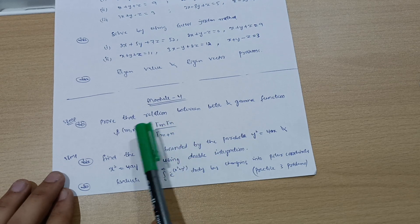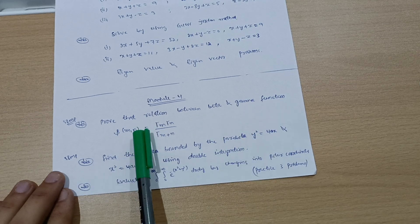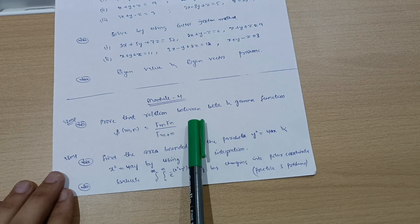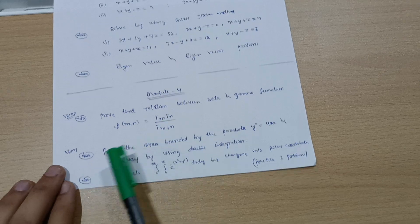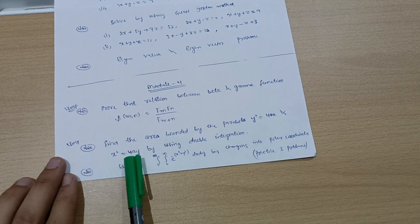Next is Module 5 in which two super important questions are there. Prove the relation between beta and gamma function: beta of m comma n equals gamma of m into gamma of n divided by gamma of m plus n. Find the area bounded by the parabola y squared equals 4ax and x squared equals 4ay by using double integration.